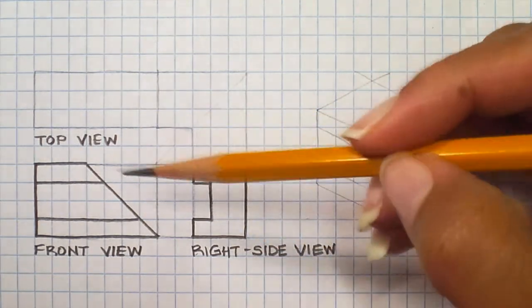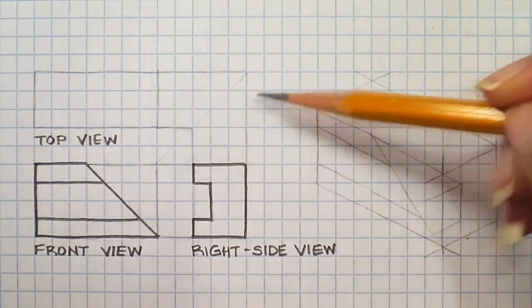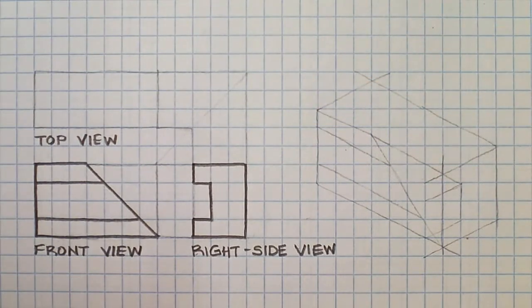We're going to construct the top view first, then the auxiliary, and then we'll construct the isometric.